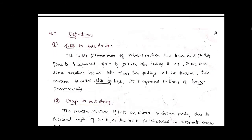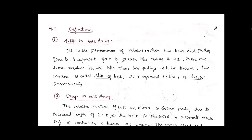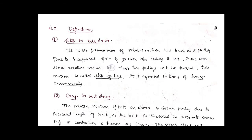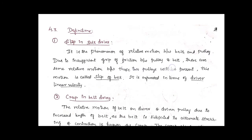Some important definitions for examination purposes. Slip in belt drives: it is the phenomenon of relative motion between the belt and the pulley due to insufficient grip of friction between the pulley and the belt. This relative motion is called slip of belt. If the friction grip is insufficient, slip phenomena takes place.